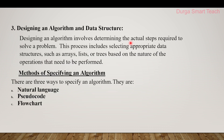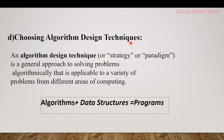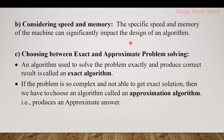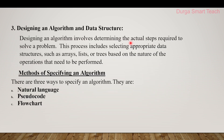The next step is designing the algorithm and data structure. Up to this point we have been understanding the problem and choosing computational capabilities. Now we need to design the algorithm and data structure. Designing an algorithm involves determining the actual steps to solve a problem, including selecting appropriate data structures such as arrays, lists, linked lists, or trees based on the nature of the operations. An algorithm can be designed using three ways: natural language, pseudo code, and flowchart.